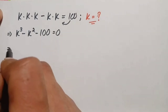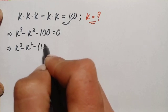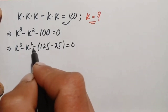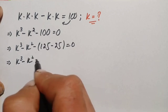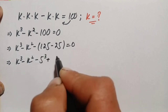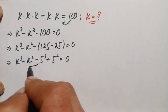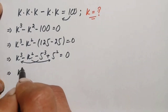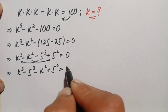We rewrite 100 as the difference 125 minus 25, so the equation becomes k cubed minus k squared minus 125 plus 25 equals zero. We can write 125 as 5 cubed and 25 as 5 squared. Rearranging, this becomes k cubed minus 5 cubed minus k squared plus 5 squared equals zero.